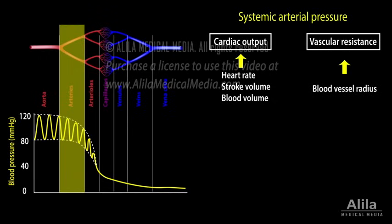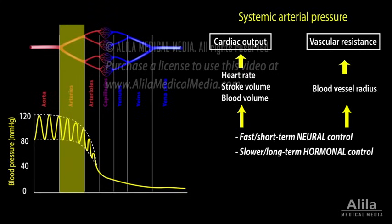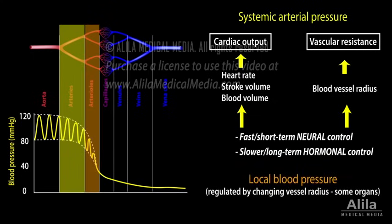Systemic blood pressure is regulated by two major groups of mechanisms: fast short-term neural control, and slower long-term hormonal control. Some organs also have the ability to locally regulate blood flow to resist changes in systemic blood pressure.